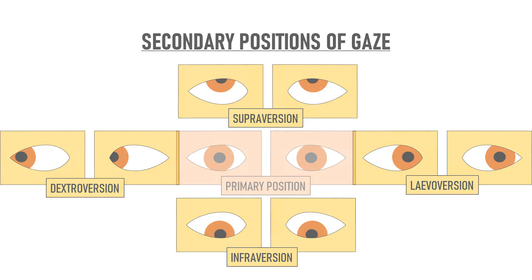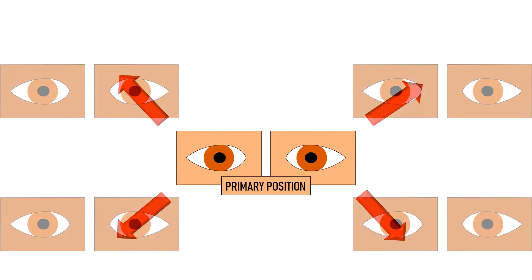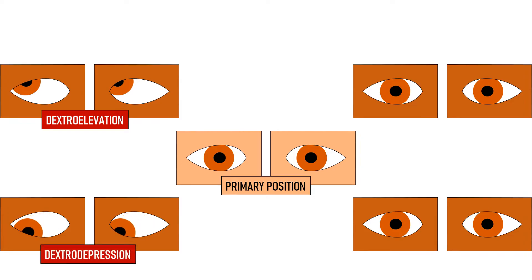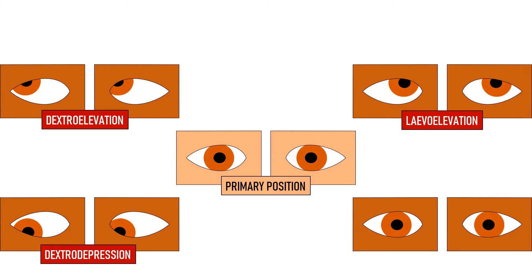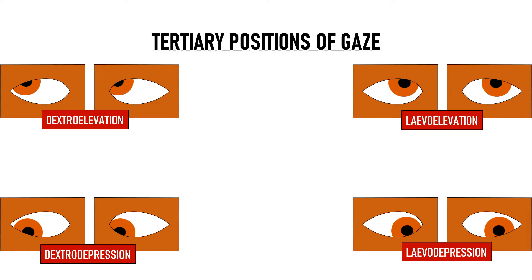When the eyes move along the oblique axis, we get tertiary positions of gaze. When the eyes move up and to the right, it is called dextro elevation. When the eyes move down and to the right, it is called dextro depression. When the eyes move up and to the left, it is called levo elevation, and when they move down and to the left, it is called levo depression. Dextro elevation, dextro depression, levo elevation, and levo depression are all tertiary positions of gaze.